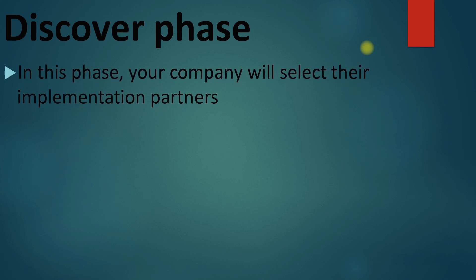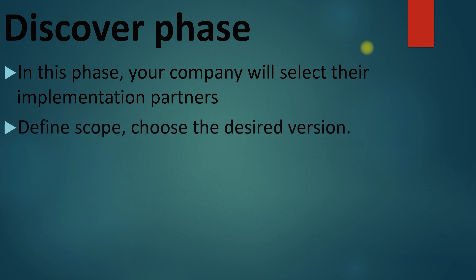The first phase is the Discover phase. In this phase, your company will select their implementation partner — an IT company who is going to implement SAP into your system. Then you need to define your scope: whatever things are in your current business and what is needed in your SAP transition.